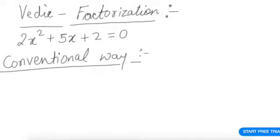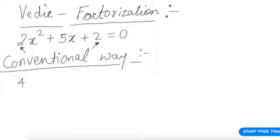The conventional way to solve is: whatever is the coefficient of x squared, which is 2, multiplied by whatever is the constant here, which is 2 — the answer is 4, which is 2 into 2. Now you split 4 in a fashion whereby the answer adds to 5.